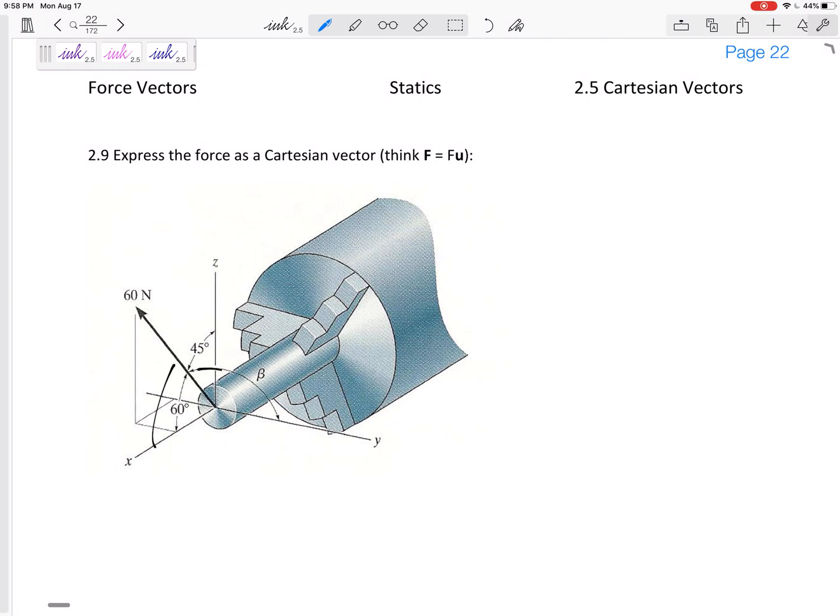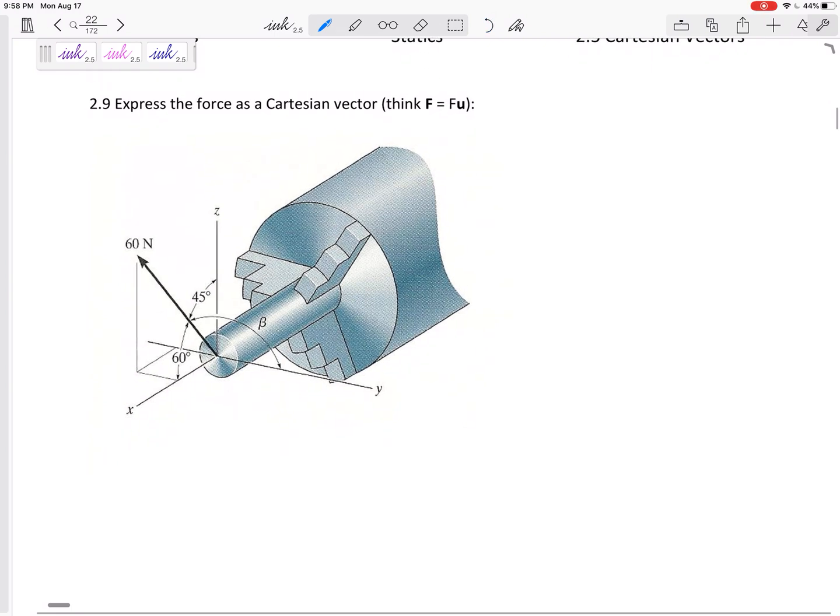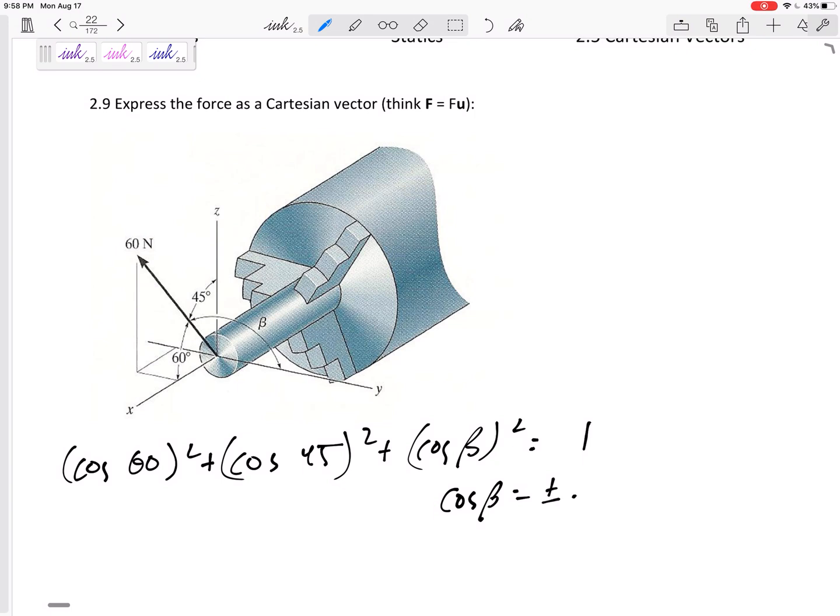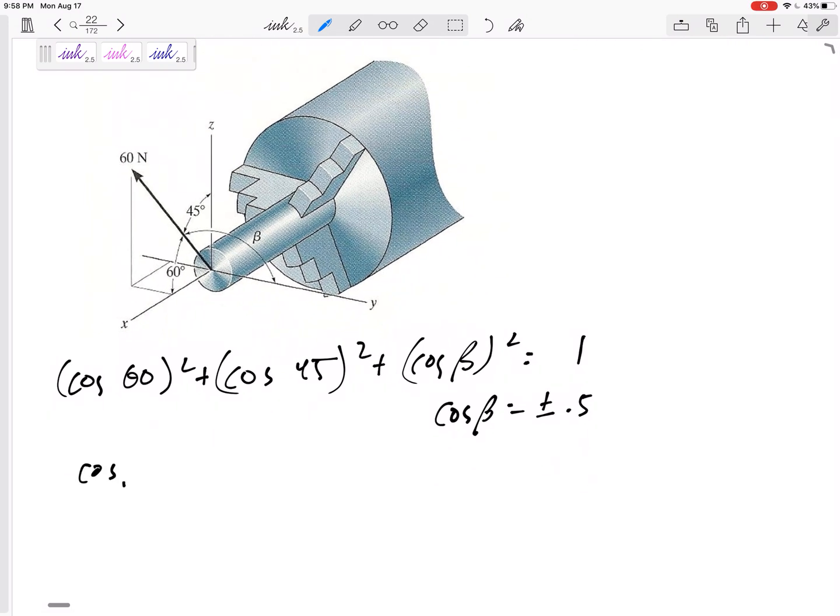I notice that these are coordinate direction angles, and I'm only given two of them. I can find the third one. How can I do that? Cosine 60 squared, cosine 45 squared, cosine beta squared adds up to one. So that means cosine beta plus or minus 0.5. That could be 60 or 120.